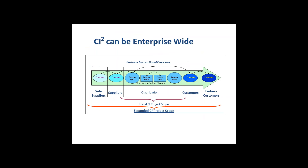Most CI projects are in the middle — the organization. Looking at the enterprise value stream, we're trying to improve from beginning to end. The expanded one says: why not involve our suppliers and sub-suppliers in our CI system? Why not customers and end-use customers? Why not bring them in and expand continuous improvement beyond our borders to make it a much more powerful process? And this is where innovation can come in heavily.